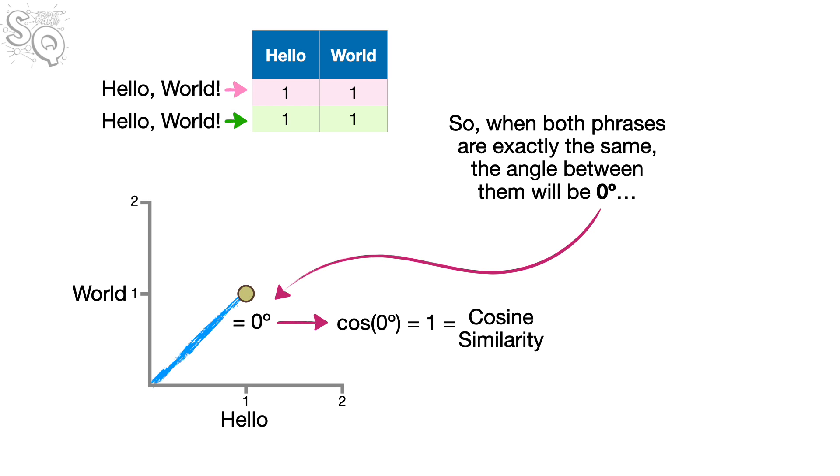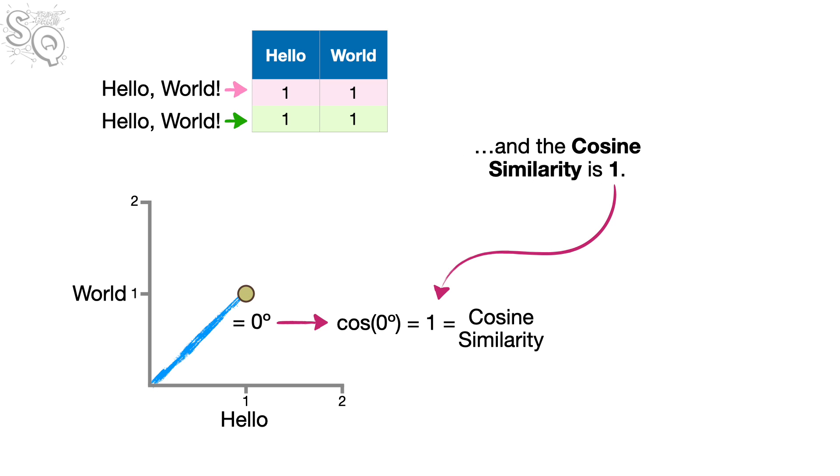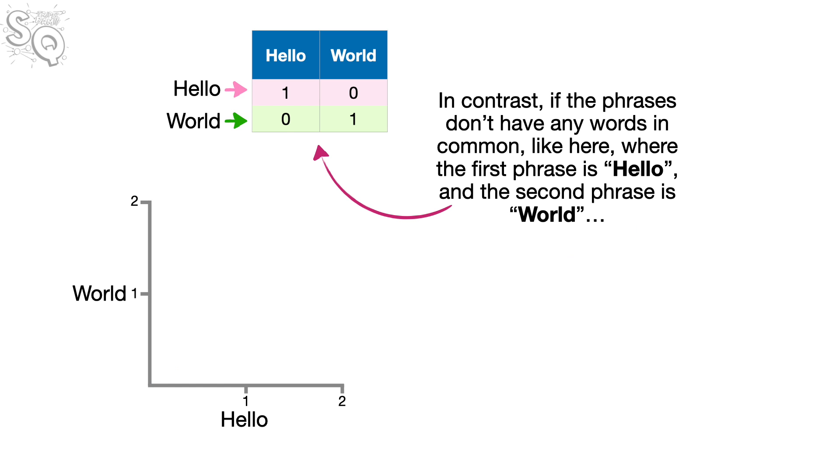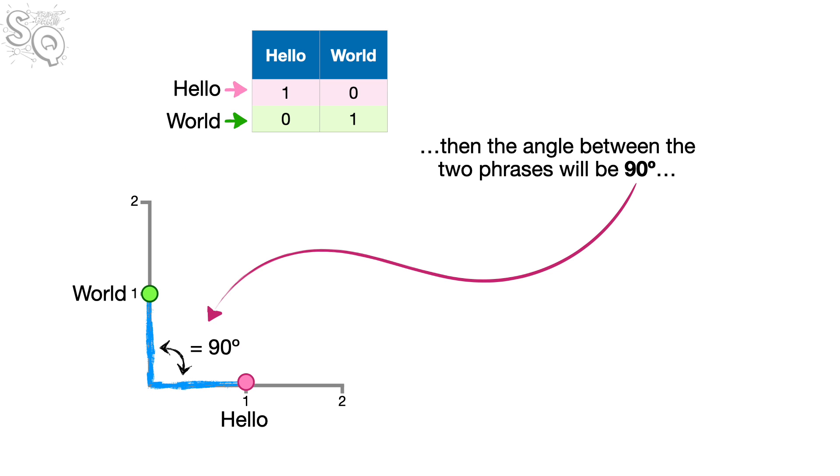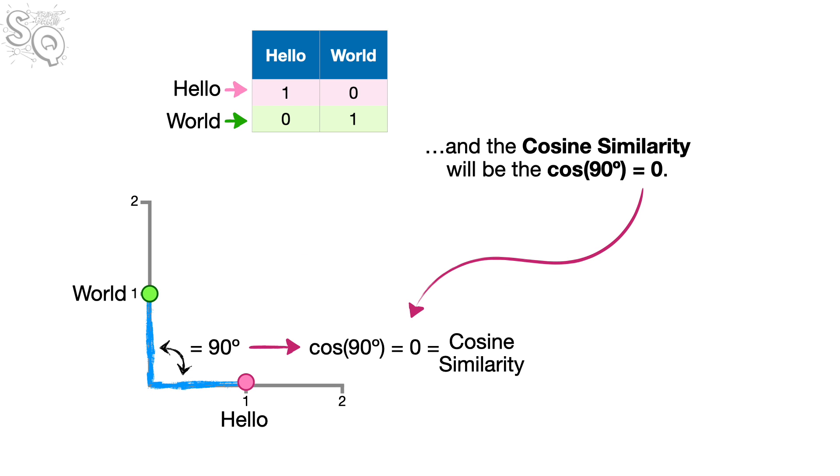So when both phrases are exactly the same, the angle between them will be 0 degrees, and the cosine similarity is 1. In contrast, if the phrases don't have any words in common, like here where the first phrase is Hello! and the second phrase is World! then the angle between the two phrases will be 90 degrees. And the cosine similarity will be the cosine of 90 degrees, which equals 0.